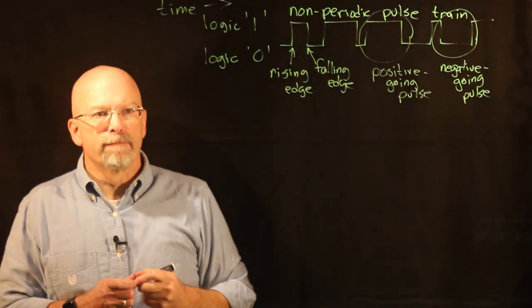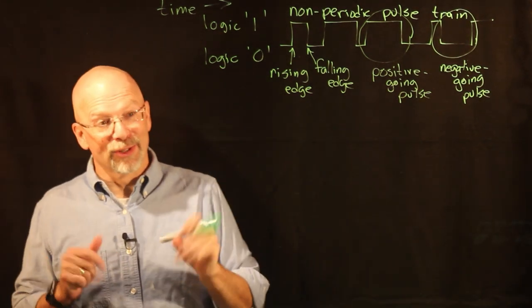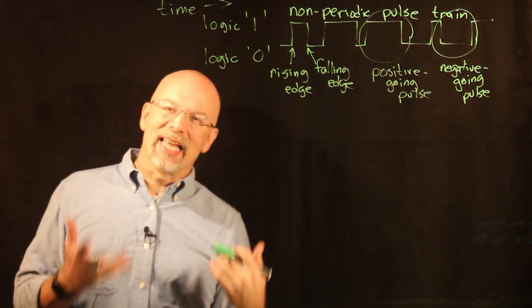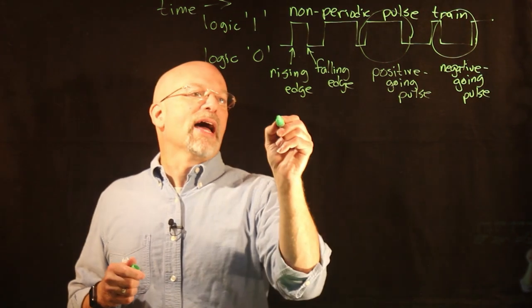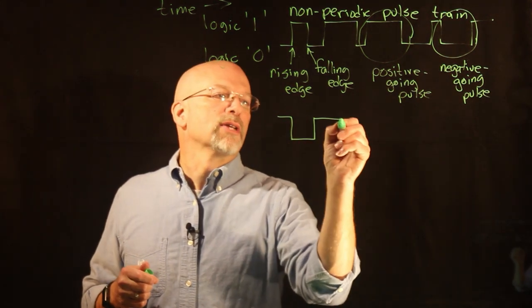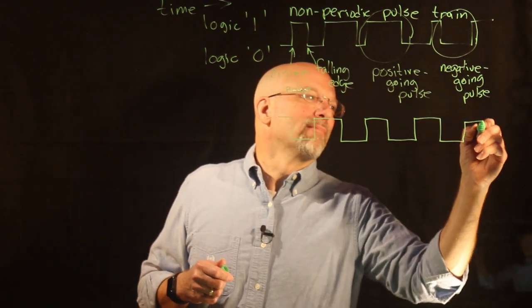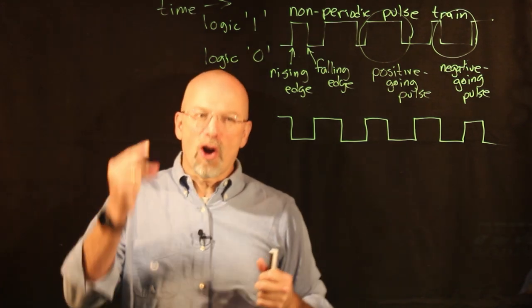We've got a non-periodic pulse train, so guess what, we probably also have a periodic pulse train. A periodic pulse train has a slightly different look about it—it has a regularity. It's got this cadence about it, it's got this heartbeat about it, and it keeps going and going.